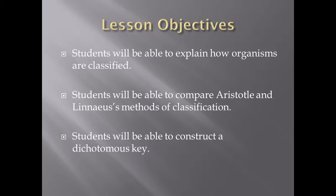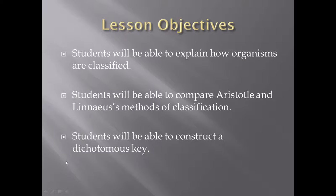First off, I want you guys to be able to explain how organisms are classified. Secondly, I want you to compare Aristotle's method of classification and Linnaeus' method of classification. And finally, I want you guys to be able to construct an actual dichotomous key. Now the last part will be done in the practical work, so if you cannot do this by the end of the video, don't be surprised because we are going to look at it more in detail later on.